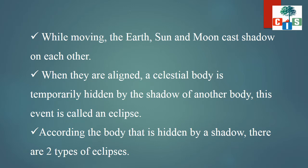Now, according to the body that is hidden by a shadow, there are two types of eclipses. These two types come from the body which is hidden by a shadow.